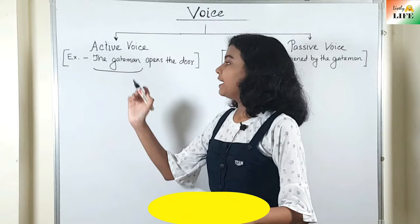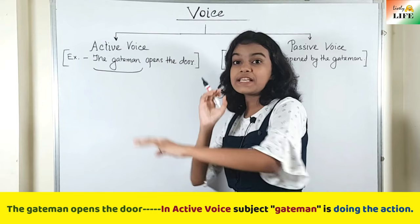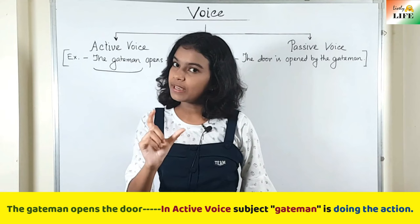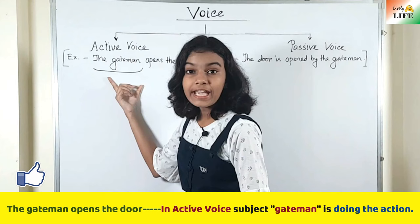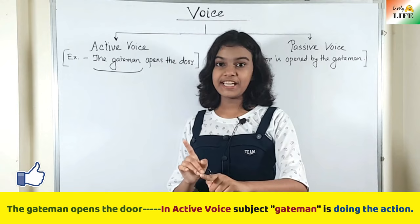Here the subject is 'the gateman.' The gateman opens the door — 'opens the door' is the action. Who opens the door? The gateman. So the gateman is the subject doing the action. Active voice is the voice where the subject does the action, where the subject is the doer of the action.